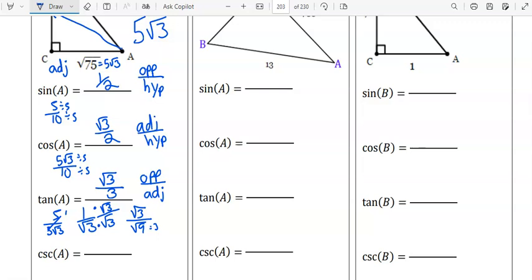Cosecant is the reciprocal of sine. So that's hypotenuse over opposite. That's 2 over 1. That's 2.